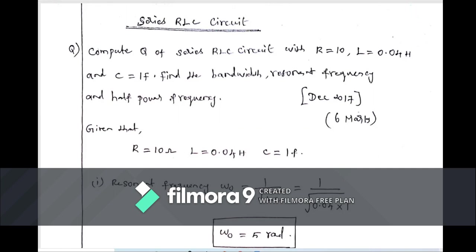Q means quality factor. In a series RLC circuit, the resistor, inductor, and capacitor are connected in series with some input voltage. This is a resonant circuit. The resistor, inductor, and capacitor values are given, and we need to compute the quality factor, bandwidth, resonant frequency, and half power frequency.